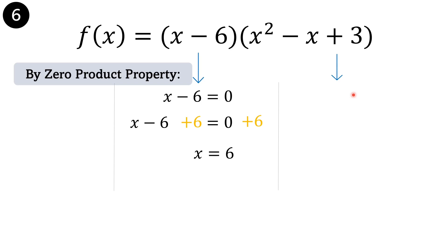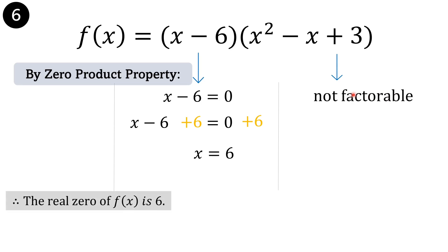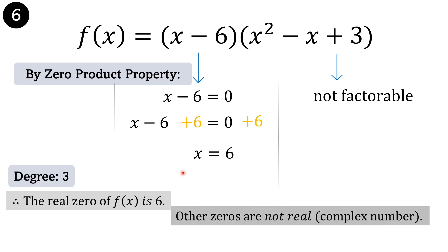Therefore, the real zero of f of x is 6. Now let's check if the zeros of this function are complete. The degree is 3. However, the real zero is only 1. Where are the other 2? The other zeros of this function are not real. In short, they are complex numbers.